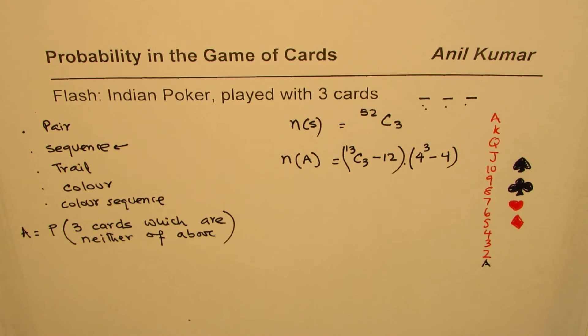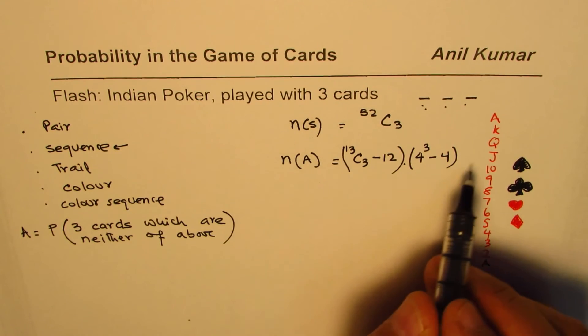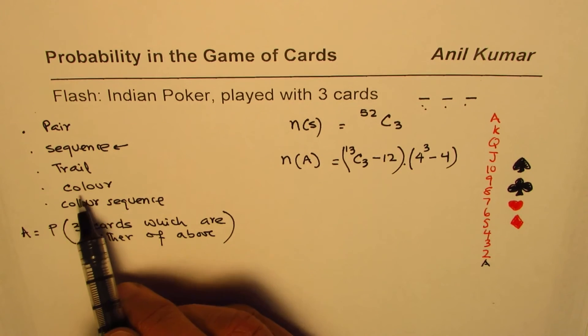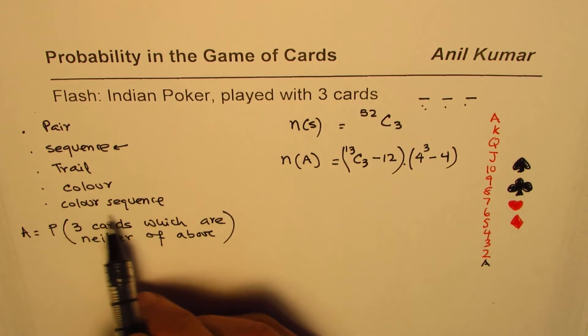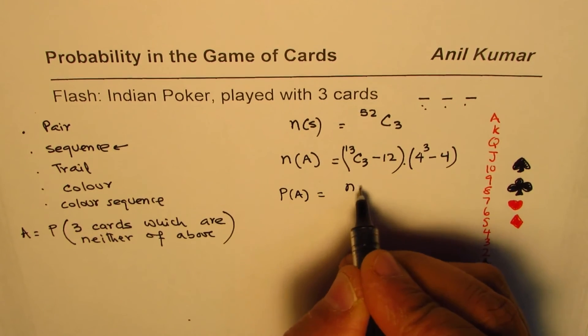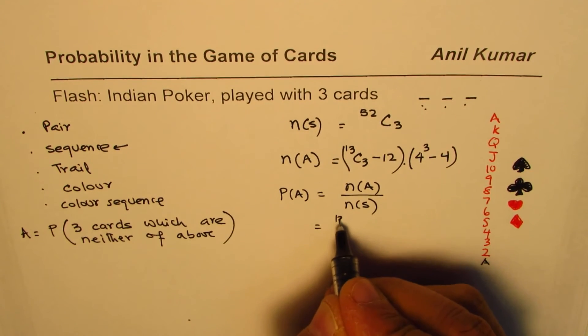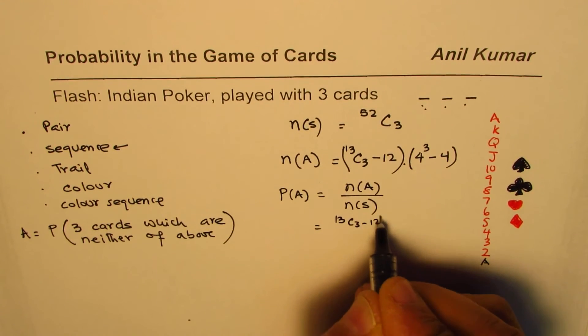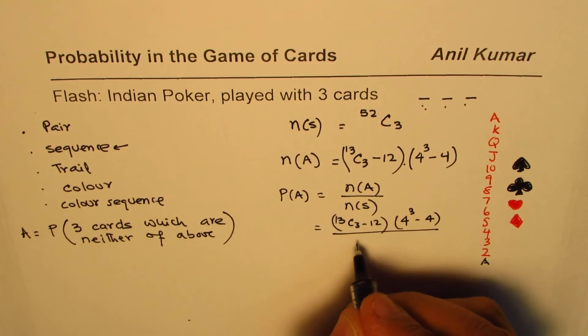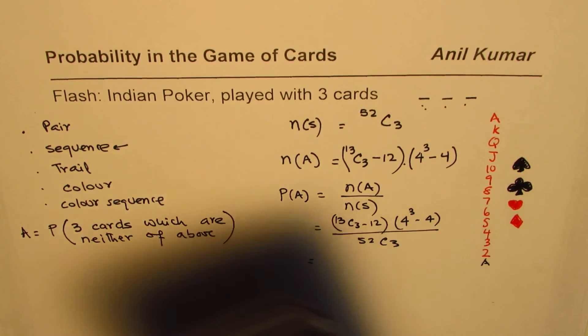So that also we have removed. So therefore now we have all the possible outcomes which are not pair, not sequence, not trail, not color, and so not color sequence. Now the probability of this event will be the ratio of favorable to total number of outcomes, and that is (13 C 3 minus 12) times (4 cube minus 4) divided by 52 C 3.